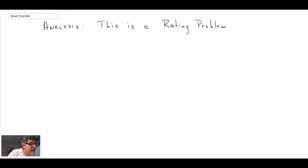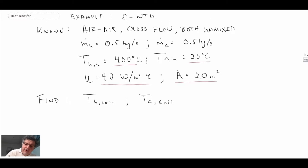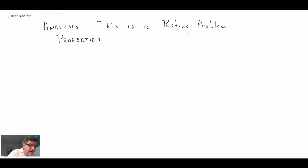We're going to begin by getting the properties of air. We have a bit of a problem here because we know the inlet temperatures of both gas streams but we don't know the exit temperatures. Usually we're supposed to be evaluating the specific heats at the average temperature and we don't know what the average temperature is, so we're going to have to do a bit of a guess here.